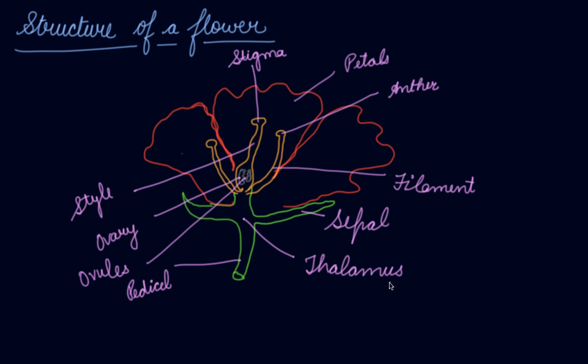This is the structure of the flower — these are the various scientific names given to its parts, like petals, stigma, and so on. Flowers vary in many ways — there can be many different colors, sizes, and shapes. Most flowers have the same basic structure. A typical flower has a stalk-like part called a pedicel, which is joined to the stem.